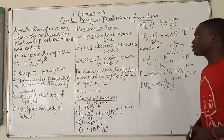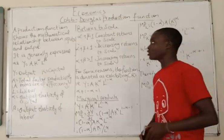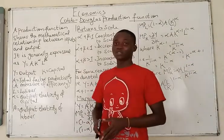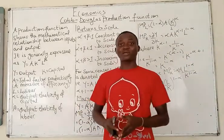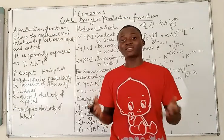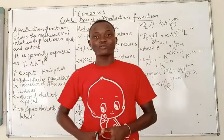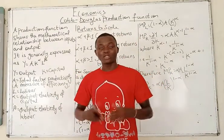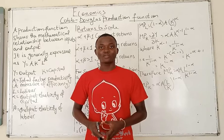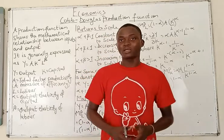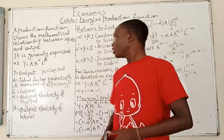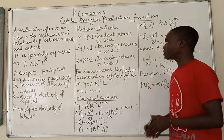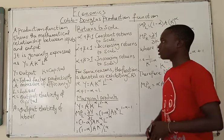Cobb-Douglas Production Function. So what is a production function? A production function shows the mathematical relationship between input and output — it is as simple as that. We have different types of production functions: we have the Cobb-Douglas Production Function, we have the Leontief Production Function, as well as a host of several others. So let's just discuss the Cobb-Douglas straight up.